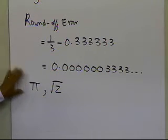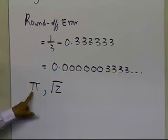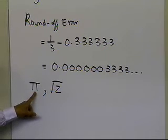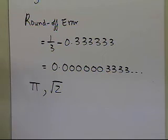The round-off error is the difference between what you want to approximate, or what you want to denote, and what you're able to get as its approximation. That's what we call a round-off error.